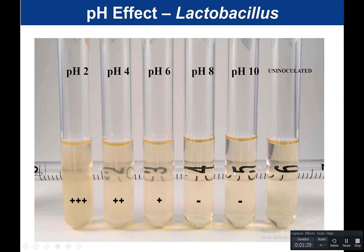In the uninoculated control, you can see the number 6 very clearly. Comparing pH 10 and pH 8, they look about the same as the uninoculated control, so we say that bacteria did not grow under pH 8 and pH 10. At pH 6, we can start to see a little bit of turbidity — the number is not quite as clear — so we quantitate that as 1+, meaning just a little bit of growth.